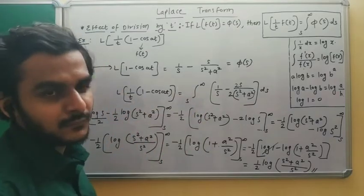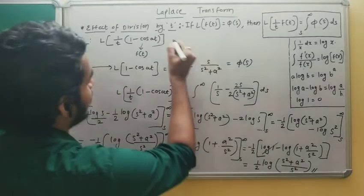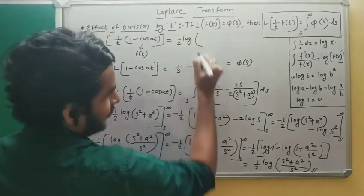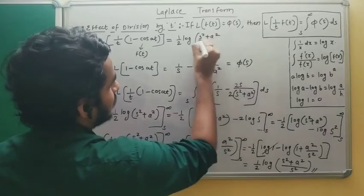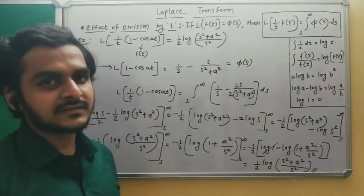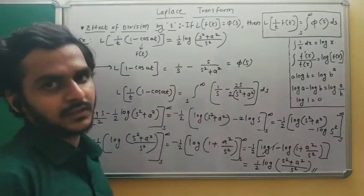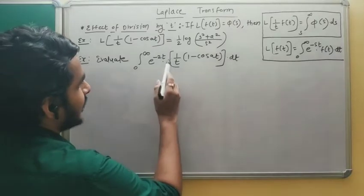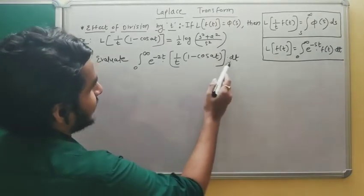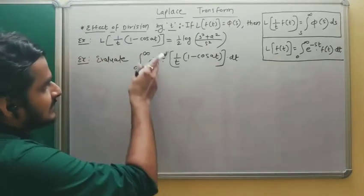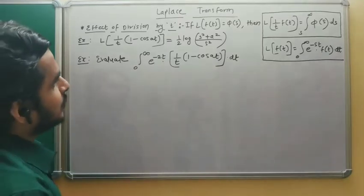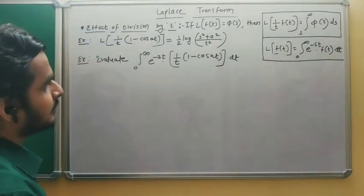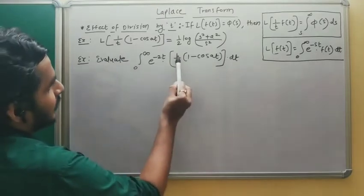Now we will see a different example based on this property, using the same result. The example is: evaluate ∫₀^∞ e^(−2t)·(1/t)·(1 − cos(8t)) dt. Notice this integral contains the bracket (1/t)·(1 − cos(8t)), which is similar to the previous example. So first find the Laplace transform of this bracket, neglecting the e^(−2t) part initially.